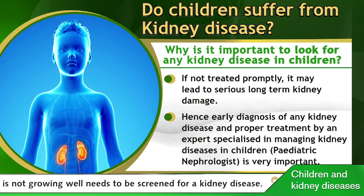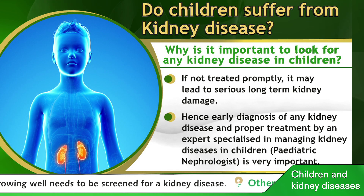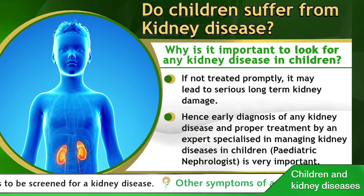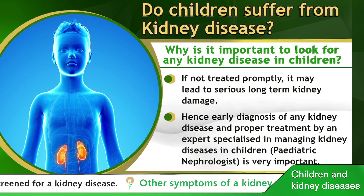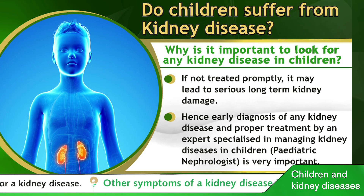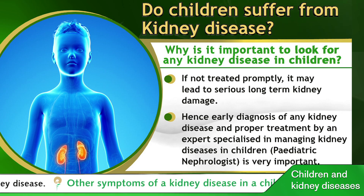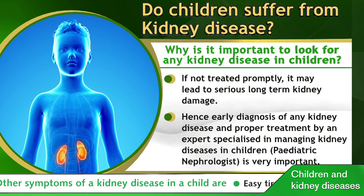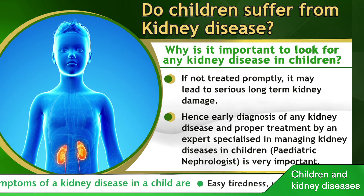Many children can also come with passing less urine or passing excessive urine, and the child may also come with complaints of bed wetting even beyond five to seven years of age.